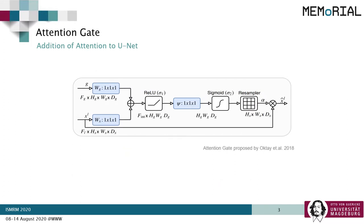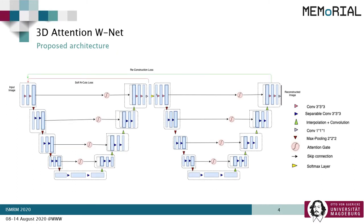Oktai et al. proposed an upgrade of the U-Net architecture by using an attention gate, which can help the network suppress regions that are not relevant. We created a 3D version of the previously proposed double U-Net architecture and incorporated attention gates with the skip connections, creating a 3D Attention Double U-Net for volumetric segmentation. During the training phase, both attention units are used, but during inference, only the first one is needed as it is the one predicting the segmentation.